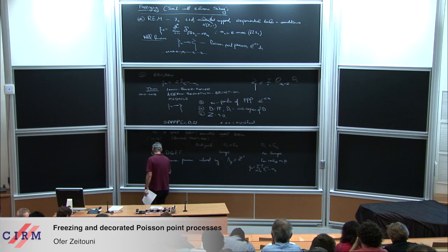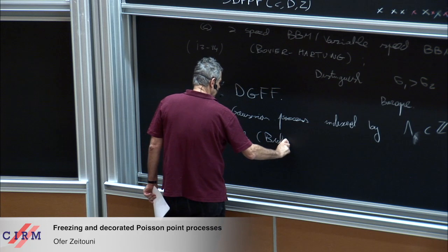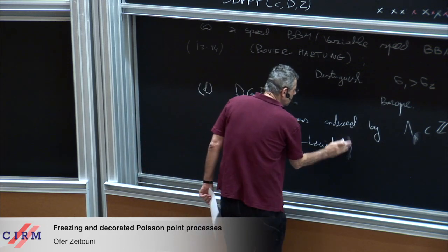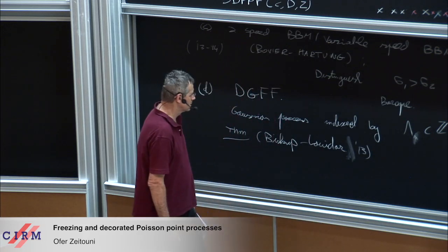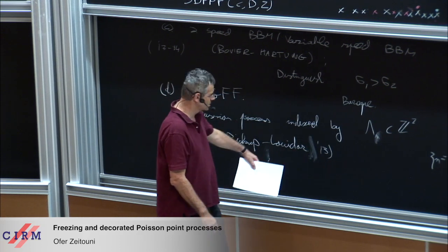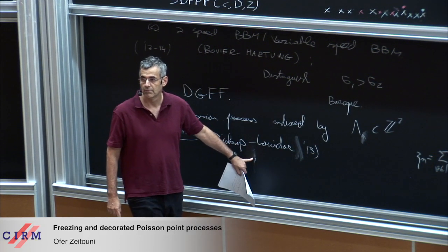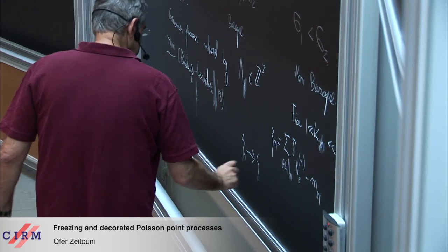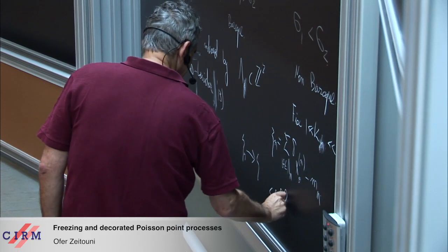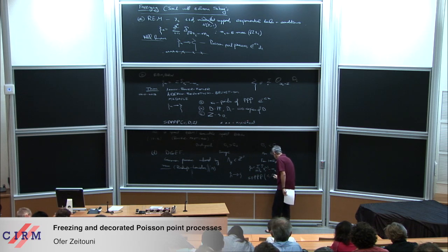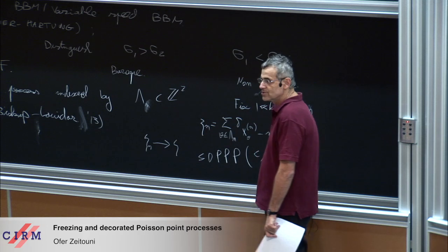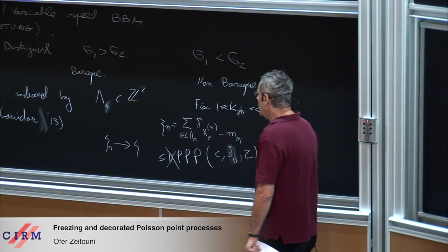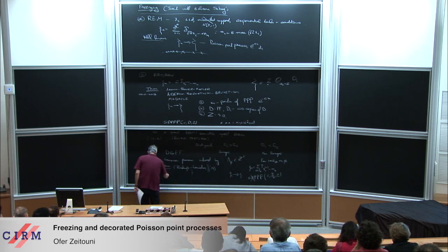This is a result due to Biskup and Louidor from last year: Ψ_N converges to a process Ψ, and this Ψ is an SDPPP with parameters c, δ_0, Z — so really there is no decoration, just a Poisson point process shifted by Z. And there is a CRM in progress by the same authors around 2014–15 showing that the correct answer when K_N equals 1 is also SDPPP.